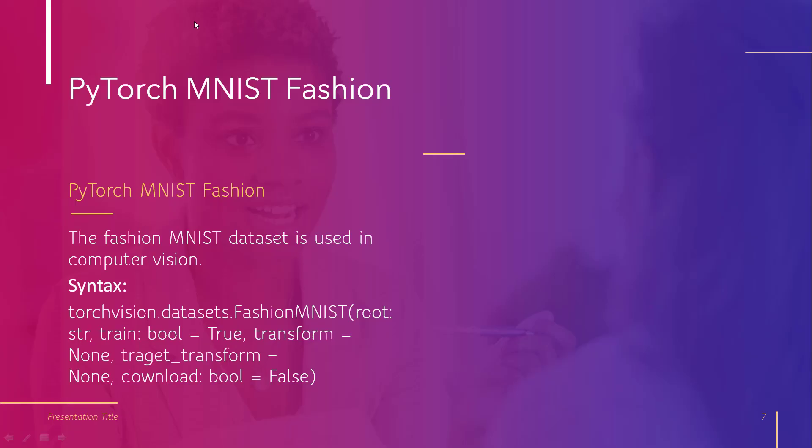Now let's discuss PyTorch MNIST Fashion. The FashionMNIST dataset is used in computer vision and also to evaluate deep neural networks for classification. The syntax is torchvision.datasets.FashionMNIST. Within this function we use several parameters. The first parameter is root, which is the root directory where the FashionMNIST data is stored. The next parameter is train, whose default value is boolean — if true it creates a dataset, if false it does not.